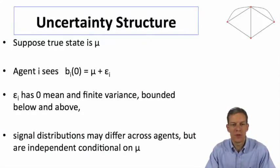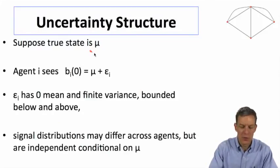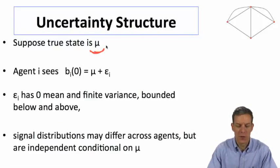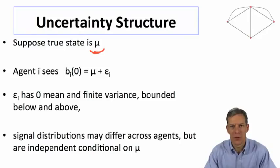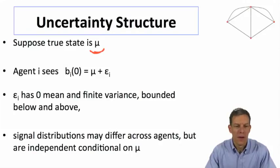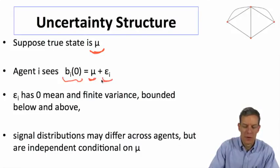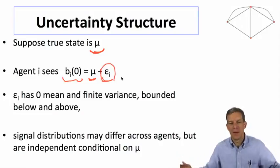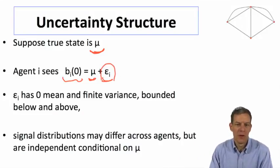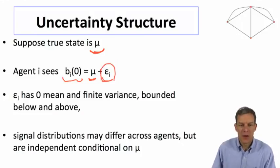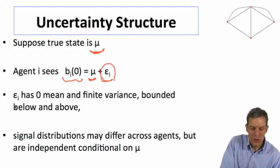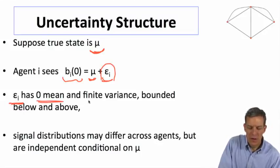Let's suppose that there's a true state out there which we'll call μ. For instance, there's really some probability of global warming, something that's true and is out there. Each person's belief at time zero is different from the true belief. So there's some true number out there and everybody has some error. The errors, what we're going to make sure of, is that the errors of different individuals have zero mean and finite variance.